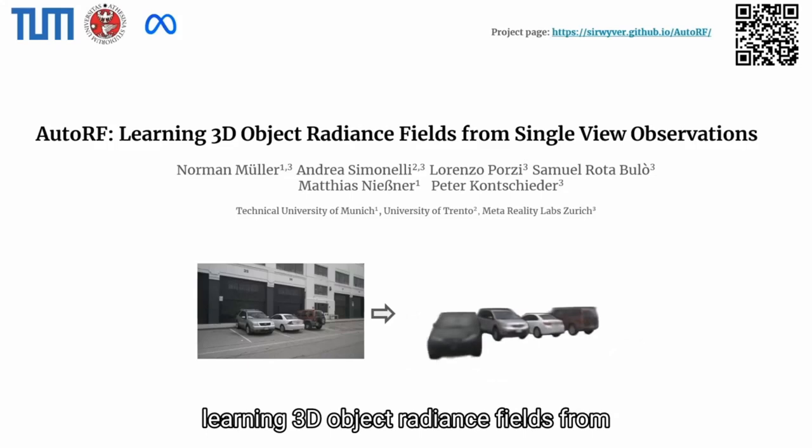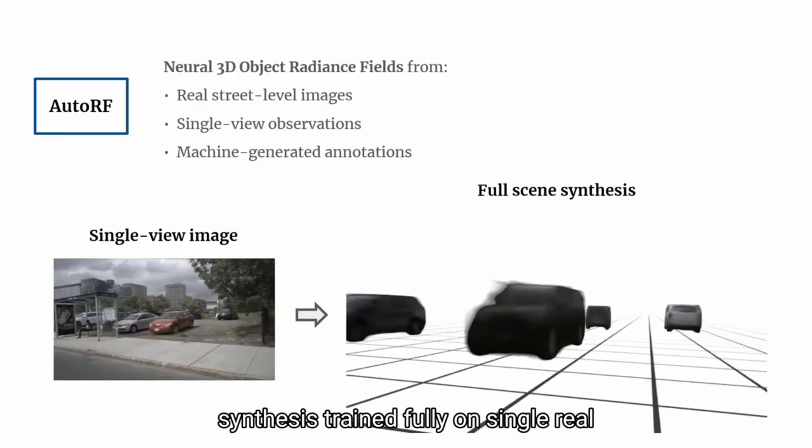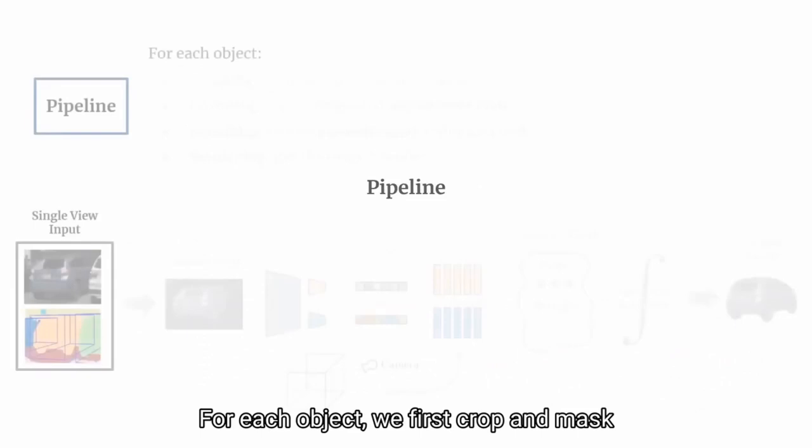We present AutoRF, a novel approach for learning 3D object radiance fields from single view observations. AutoRF is the first approach for novel object view synthesis, trained fully on single real street-level observations and machine-generated annotations only.